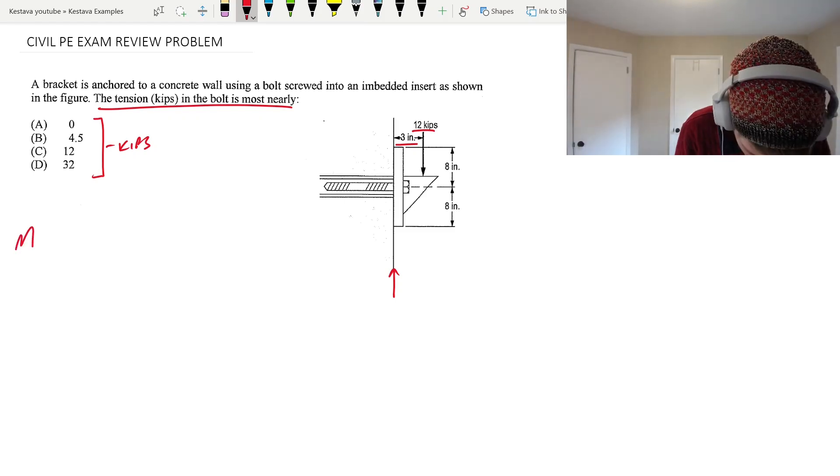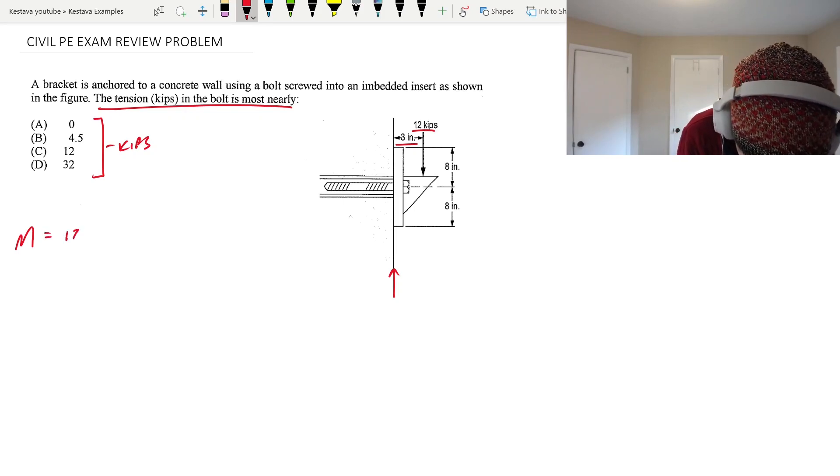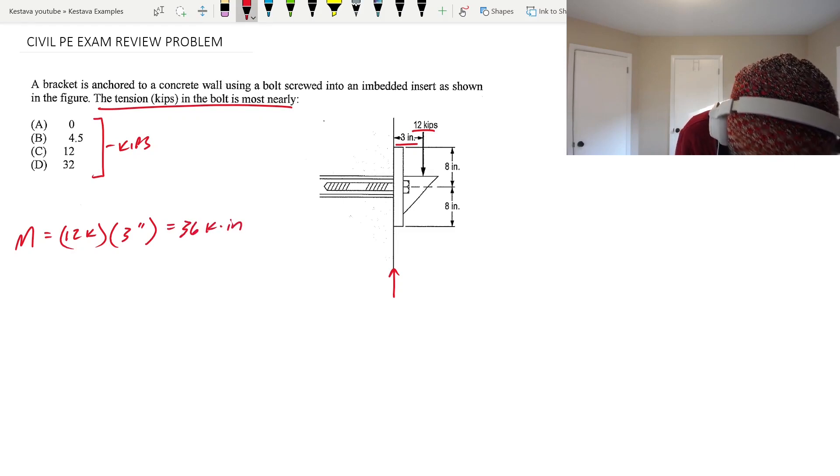So just M, we'll just call it M, not M ultimate or M required or anything. Just M is going to equal your force, which is 12 kips, times your perpendicular distance, because that's what moment is. And that is 3 inches. That comes out to 36 kip inch. And what is happening there is that is the moment that's happening about your anchor in the concrete.